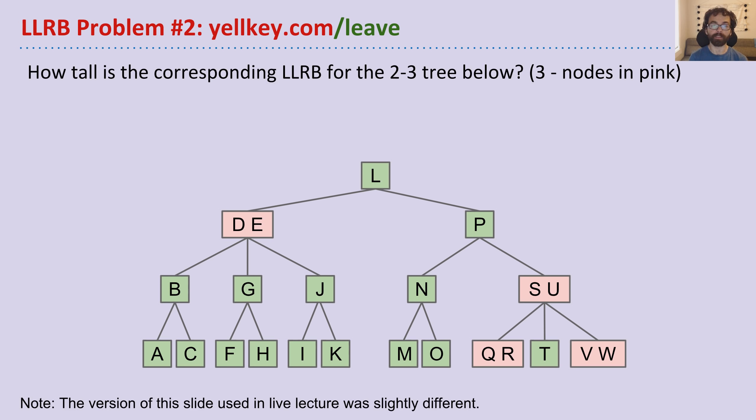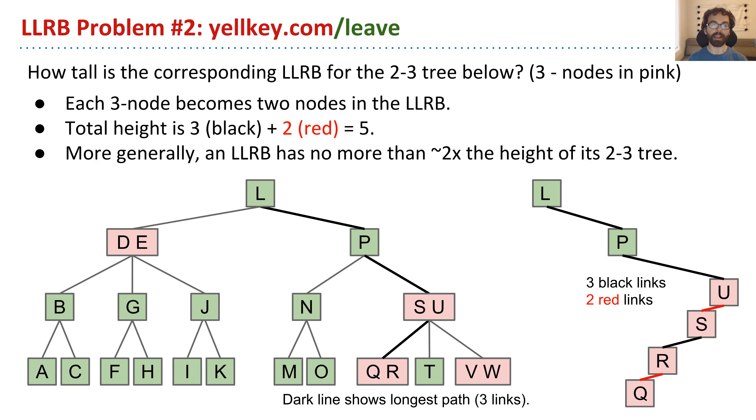So it turns out the equivalent LLRB would have height 5. So I'm moving everything over to the left, and I'm drawing the critical path, the longest path, here in black, from the root to one of its leaves. So remember that every three node is going to be two separate nodes in the LLRB that are connected by a red link. So for example, SU is S connected to U by a red link, and QR is Q connected to R by a red link. And so if we look at this, we see that the overall height is three black links and two red links.